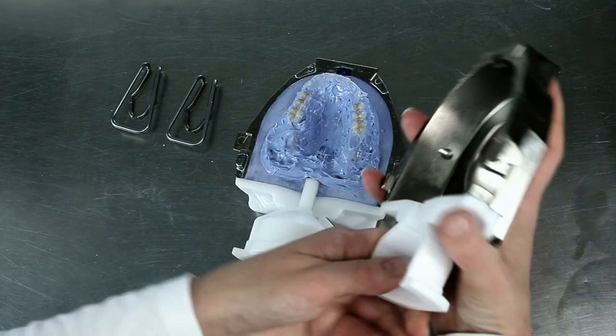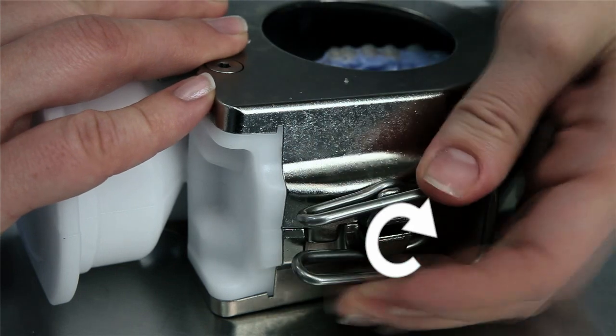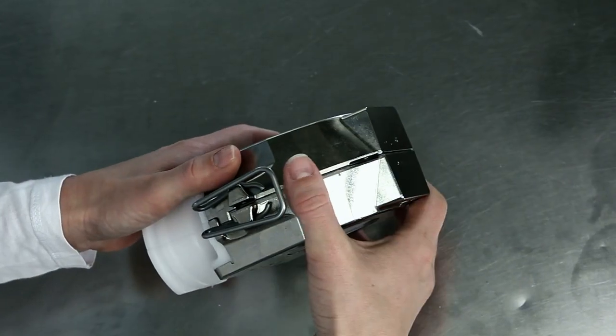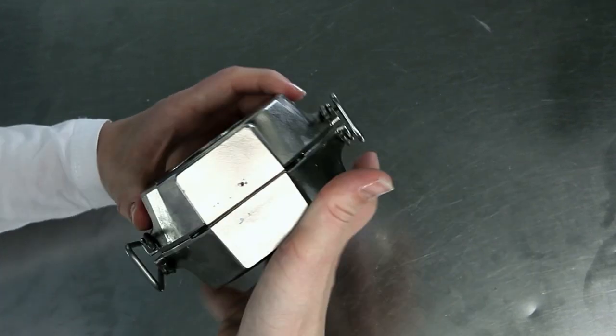Now lock the two flask halves using the locking clasps. Make sure that the flask edge is clean.